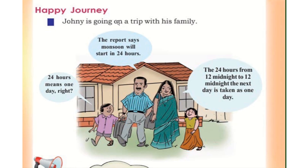Happy journey! Journey is going on a trip with his family — his wife and two children. The report says monsoon will start in 24 hours. 24 hours means one day, right?